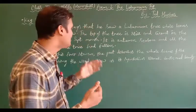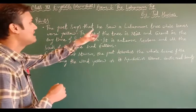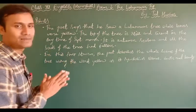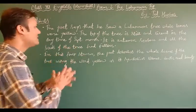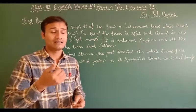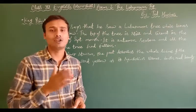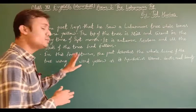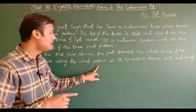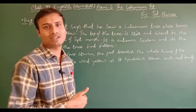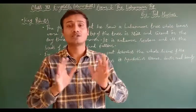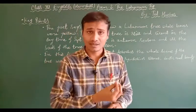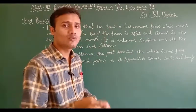In the first stanza, the poet says he saw a laburnum tree whose leaves were yellow. The top of the tree is still and silent in the daytime of September — it is autumn season and all the seeds of the tree had fallen. The poet uses the word 'yellow' as it symbolizes silence, death, and beauty, describing the complete stillness of the tree.